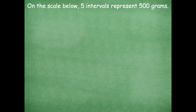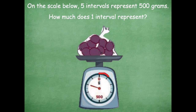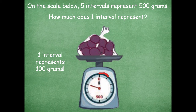On the scale below, five intervals represent 500 grams. So as they're going around, the scale is measuring in grams, and all the way halfway around represents 500 grams — so five of those intervals total represent 500 grams. How much does one interval represent? Maybe 100, maybe 10 — let's count around. If we think it's 100, we count: 100, 200, 300, 400, 500. So each interval represents 100 grams.